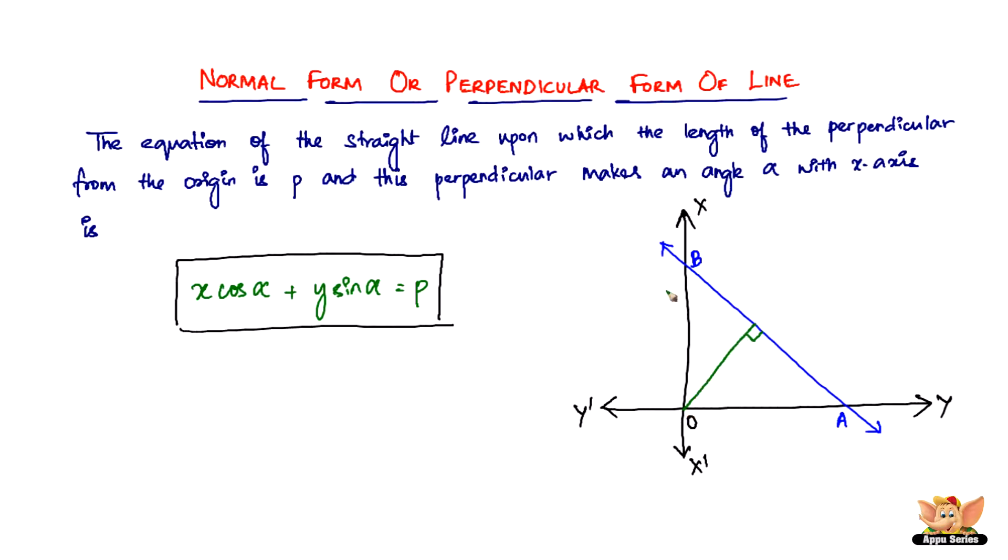It's perpendicular to the straight line and the length of this line will be P, and also it's going to be inclined to the x-axis at an angle alpha. So this angle is the alpha which we are talking about here.